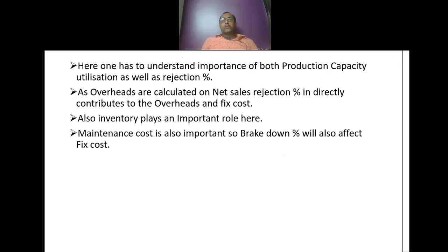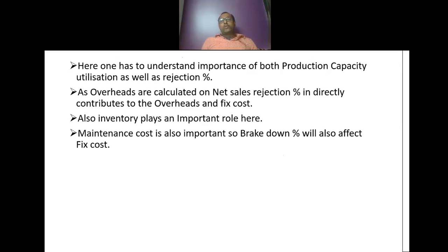One has to understand the importance of both production capacity utilization and rejection percentage. As overheads are calculated on net sales, rejection percentage directly contributes to your overhead or fixed costs. Inventory also plays an important role here since it is calculated on net sales. Maintenance cost is important too — your breakdown percentage has to be reduced, as it directly affects fixed cost by affecting productivity and production capacity utilization.